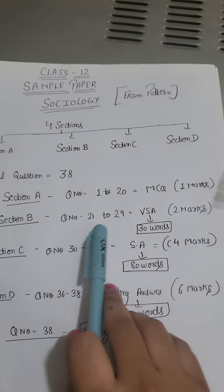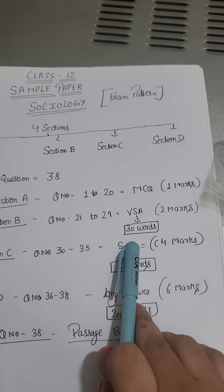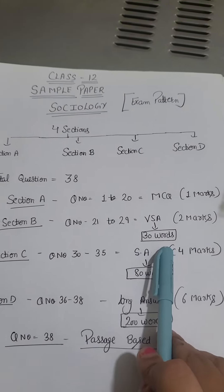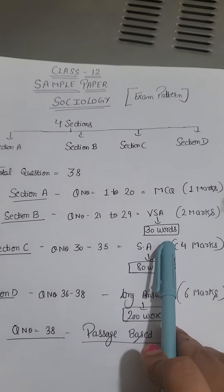Section B contains question number 21 to 29, that is very short answer type questions, which will be 2 marks in which you will answer in 30 words. So you will have to manage the word limit. How do you set the word limit? How do you practice?